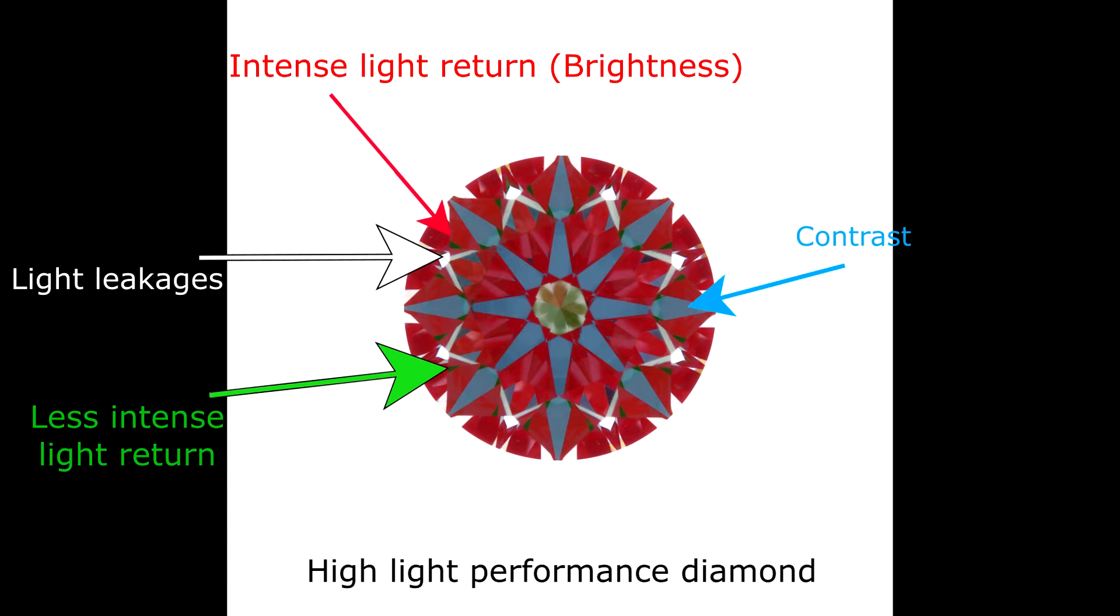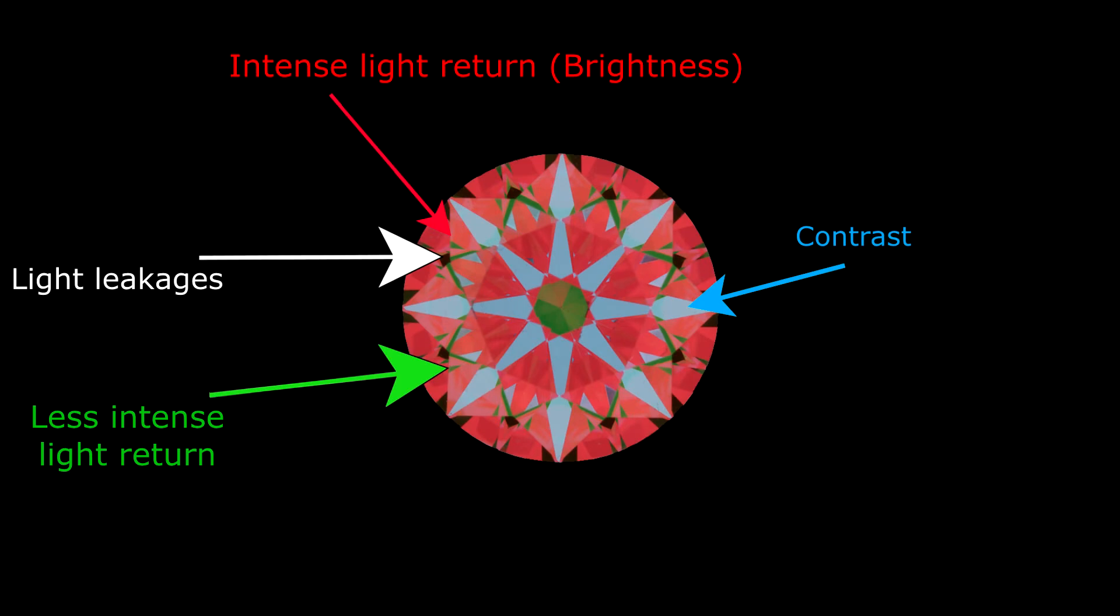Now another way to take the ASET scope is by using a black littered background which somewhat works the same way. This is the same diamond taken with a black littered background. It looks pretty much the same. The red areas are slightly darker but represent the same thing. Arrows are still blue which is the contrast. The greens are slightly darker green but still the same color.